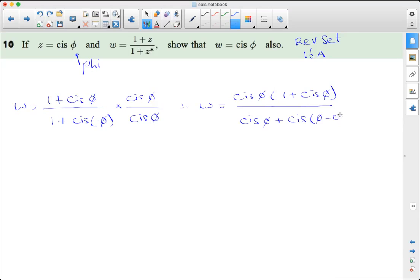cis(-φ), which is cis(0), which equals 1. Hence what we have is cis(φ)(1 + cis(φ)) in the numerator, and in the denominator we have (1 + cis(φ)). That completely cancels out, hence W is also cis(φ).